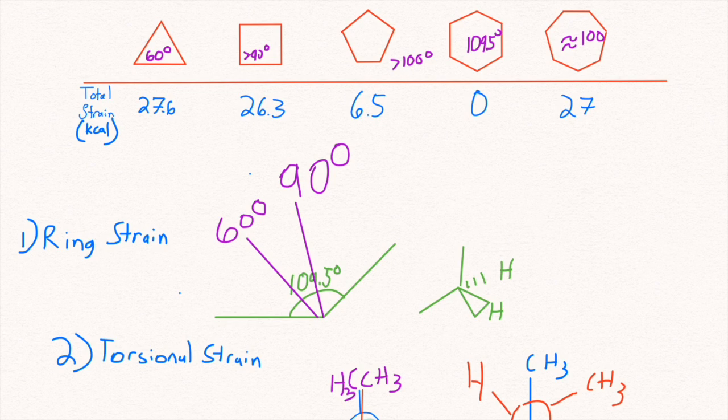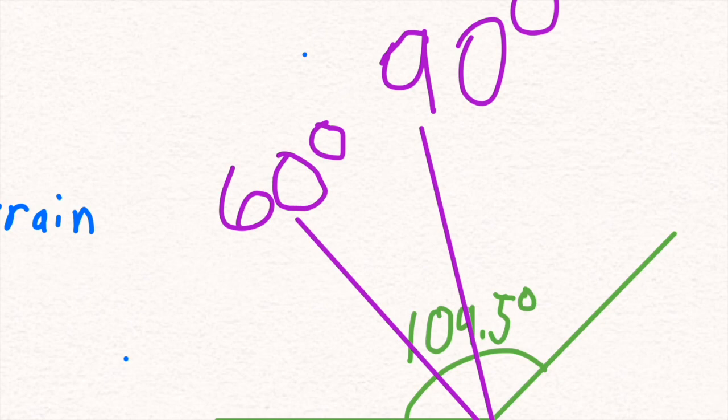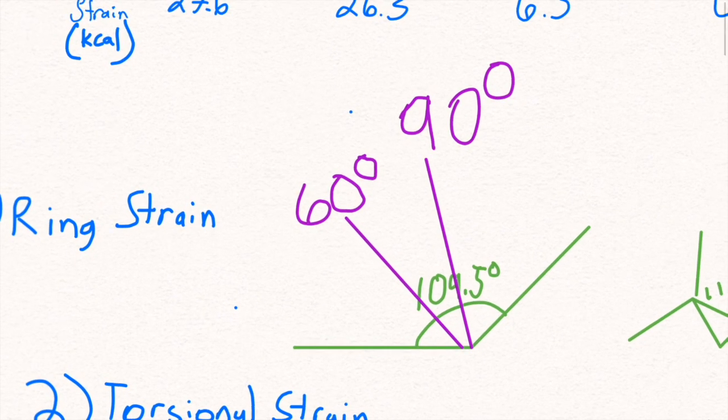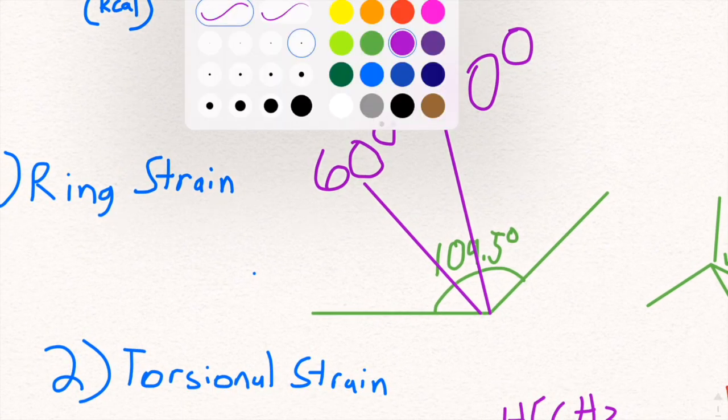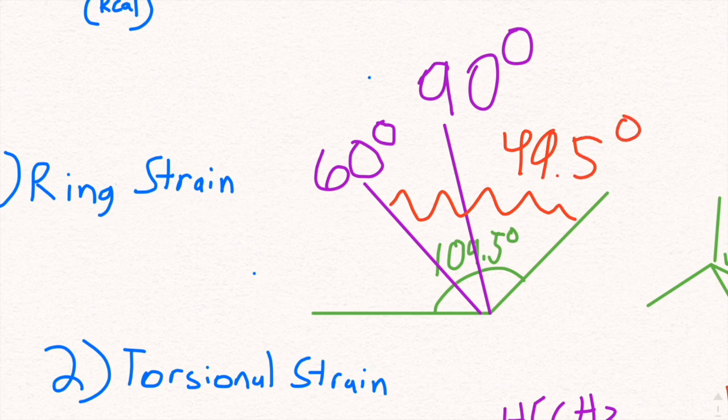It has a huge difference at 60 degrees each angle versus 109.5 degrees being our ideal. It then has this giant gap here of about 49.5 degrees, and that huge difference creates a lot of energy needed to maintain the molecule.